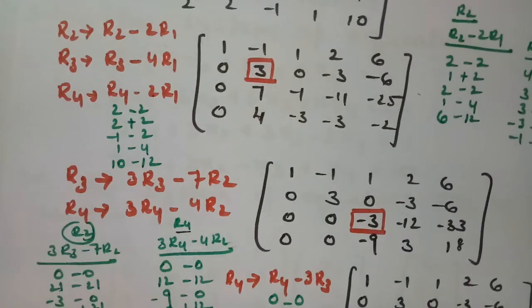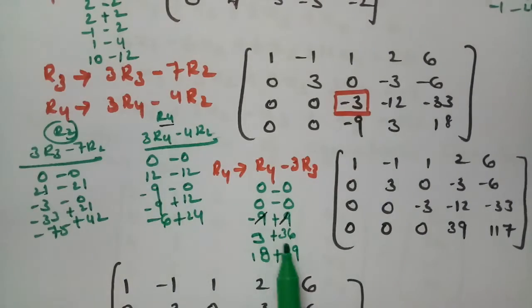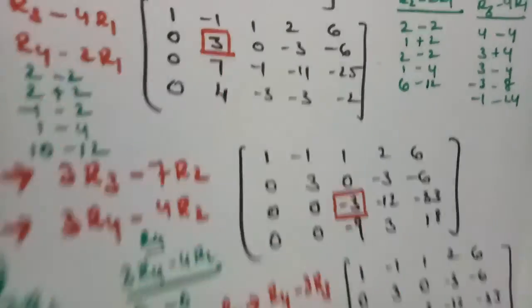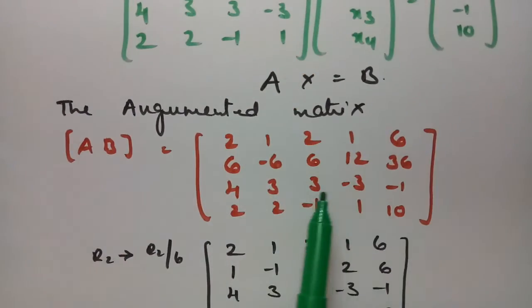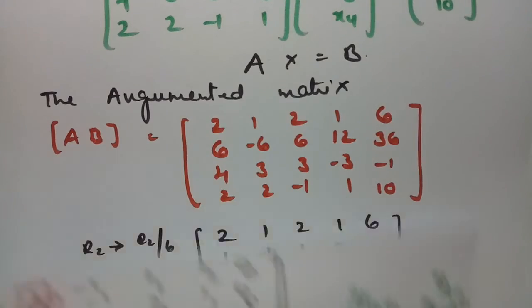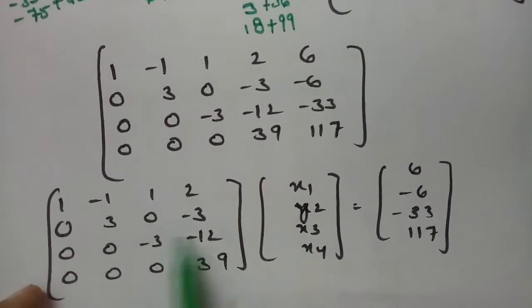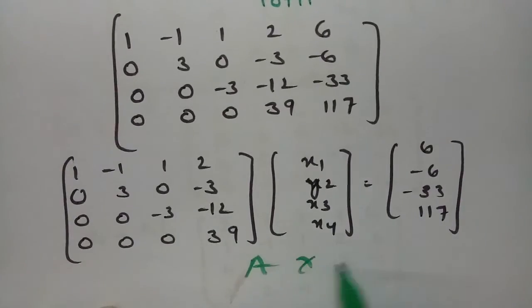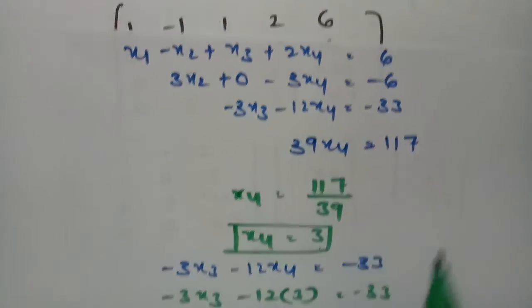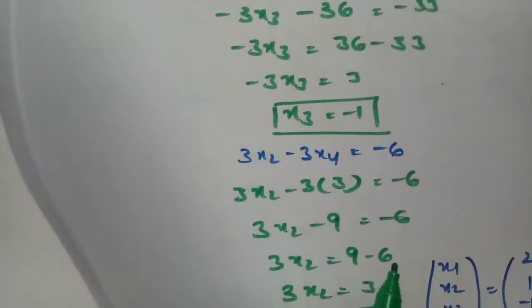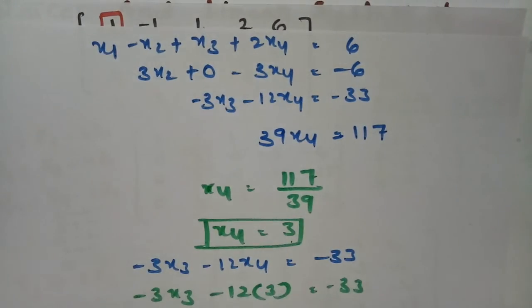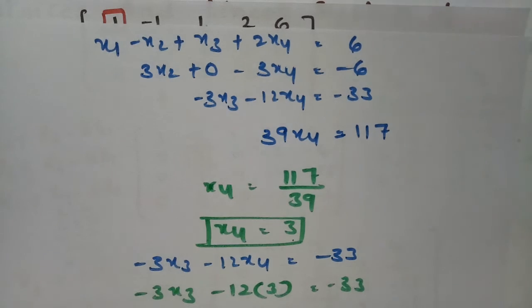Therefore all four values are: x1 = 2, x2 = 1, x3 = -1, x4 = 3. This is the most important problem, repeatedly asked in exams, so be careful while solving. If you found this helpful, please like, share with friends, and subscribe. Thank you for watching and staying till the end.